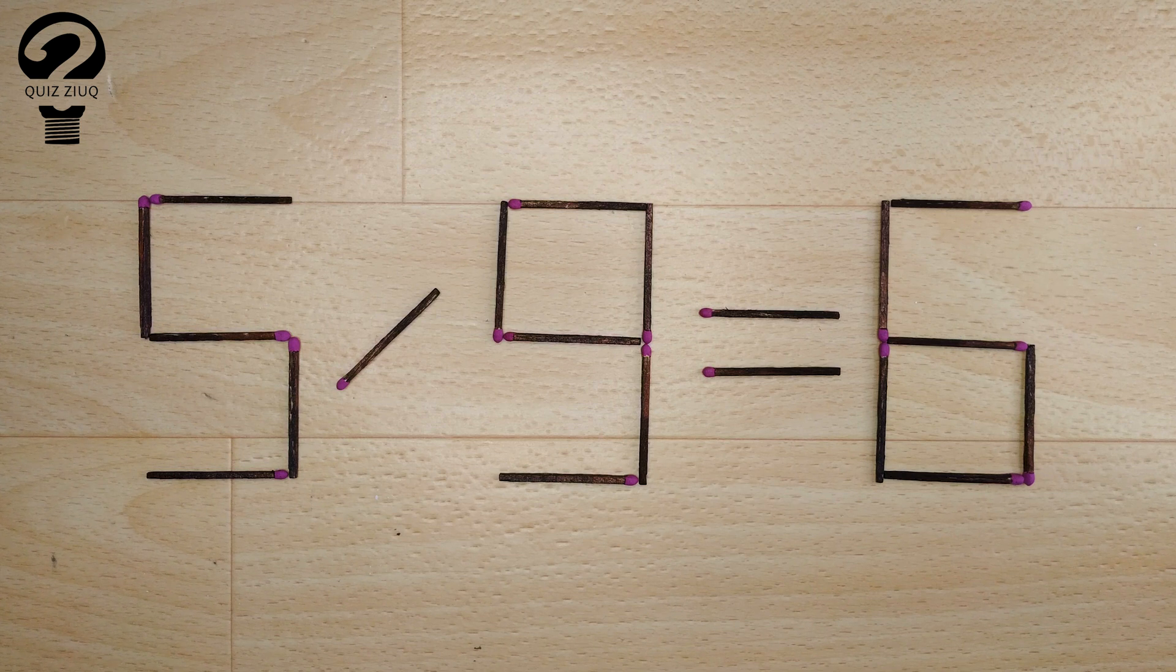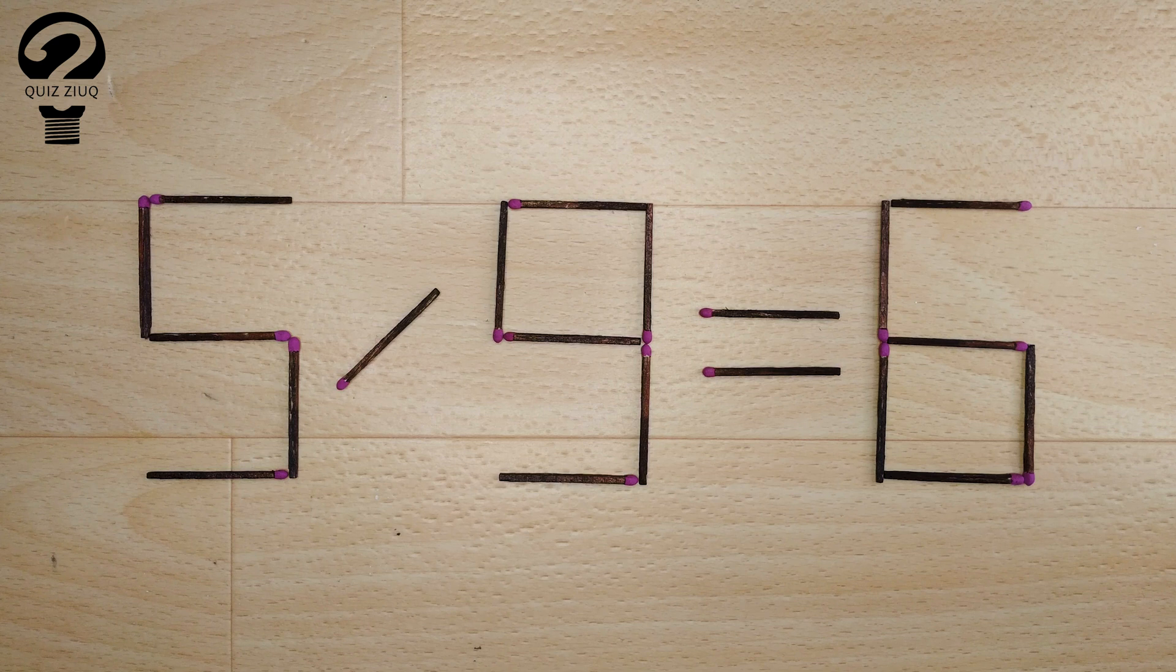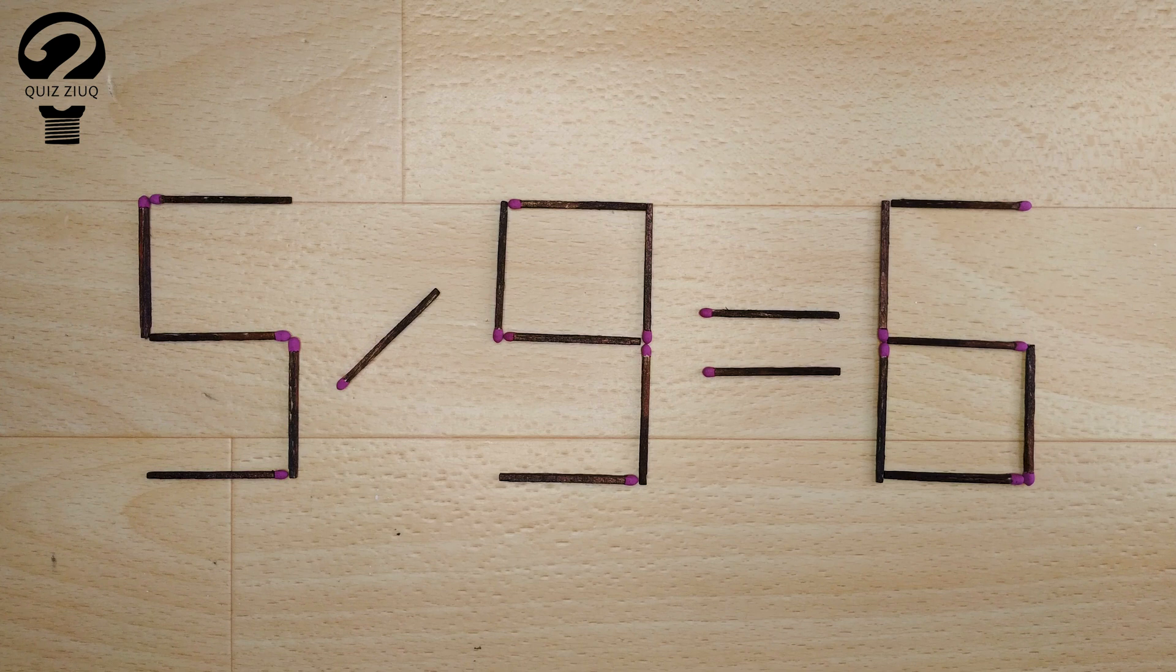Here's the next puzzle. We have this equation. 5 divided by 9 equals 6. Our equation is incorrect, and we need to move two matches to make our equation correct.